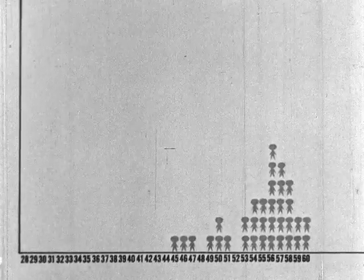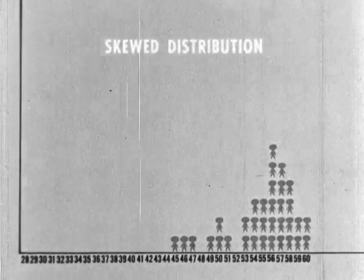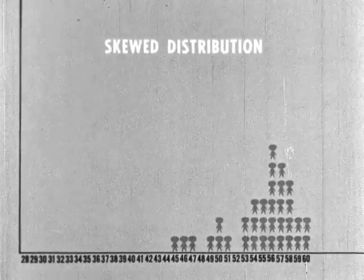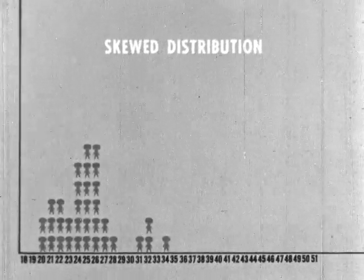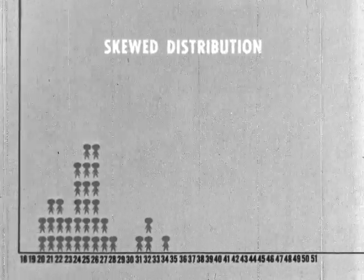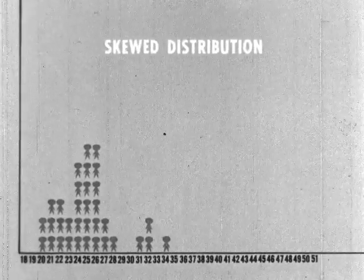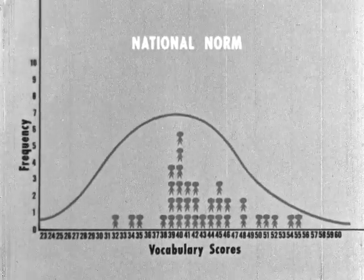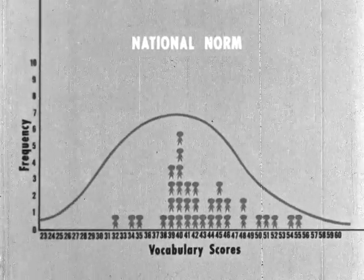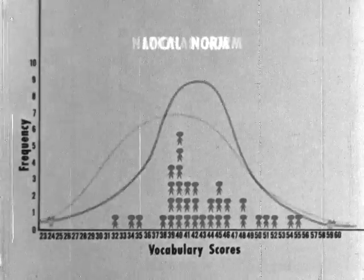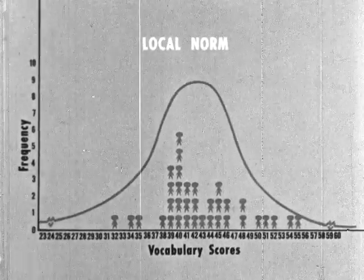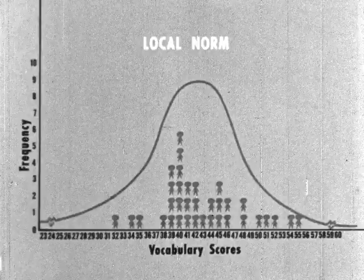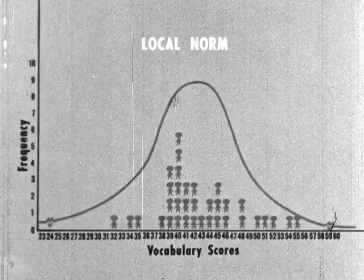If the distribution had looked skewed toward the high end, Miss Wilcox would know that for some reason this test was not suitable for her group — it might have been too easy, or she might have a large number of superior students in comparison to the norm group. A distribution skewed toward the low end might indicate too difficult a test or an unusually large number of slow students. Miss Wilcox can determine where her class stands in relation to eighth grade classes in general by comparing them to the national distribution. The norm is a reference point for comparison, not a standard of performance. Local norms can be built up over a period of time as groups of students are given the same test, offering greater assurance that the class is being compared to a really comparable group.